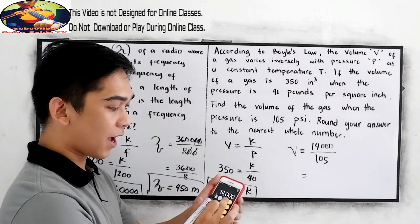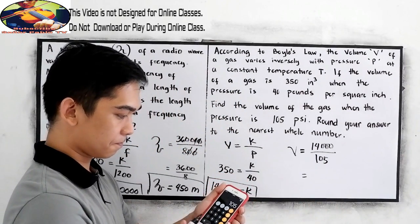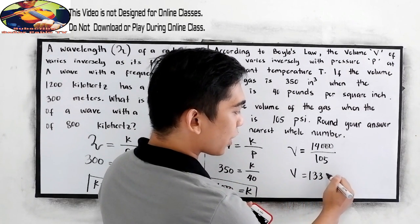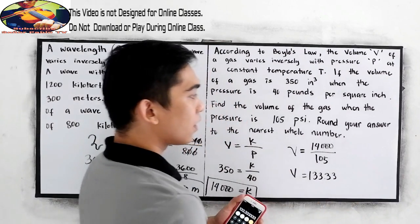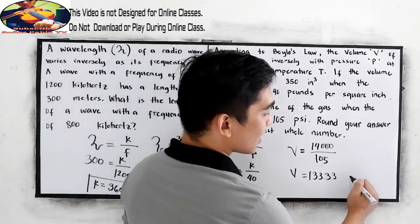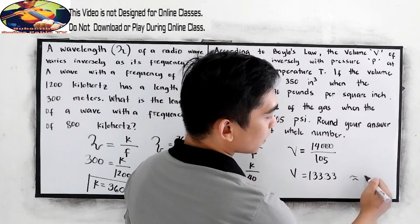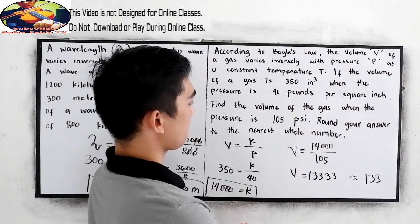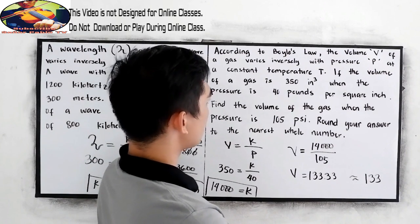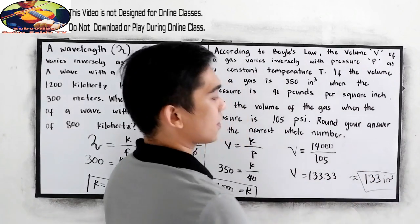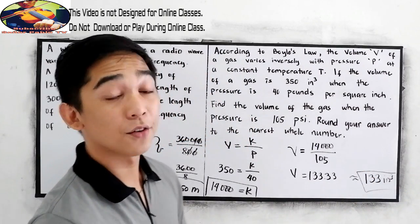So, we're going to find the volume. Our constant is 14,000 divided by 105. That will give us 133.33. We need to round to the nearest whole number. So, that is equal to 133 cubic inches. That would be the volume.